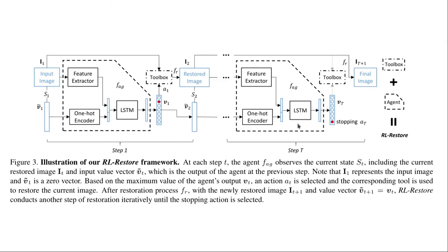Here we can see that the LSTM gives a stop signal as its output. And when that happens, we reach the final time step T and no tool from the toolbox is picked. And the input image is decided to be the fully restored image. This is how the RL restore algorithm works.